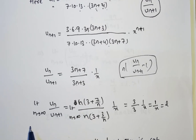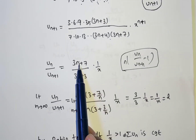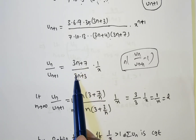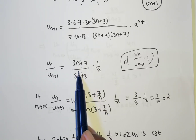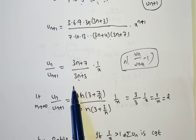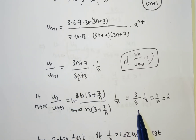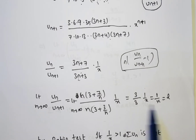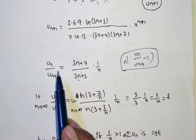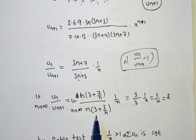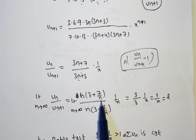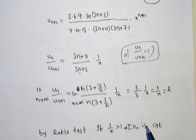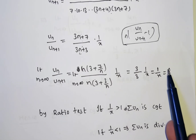Now apply the limit as n tends to infinity. The expression is (3n+7)/(3n+3) · (1/x). Both numerator and denominator have degree 1, so taking the limit gives the ratio of coefficients: 3/3 · (1/x) = 1/x. Alternatively, take n common to get (3 + 7/n)/(3 + 3/n) · (1/x), and as n→∞, the 1/n terms go to 0, giving 3/3 · (1/x) = 1/x. So the limit L = 1/x.